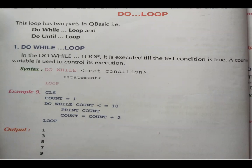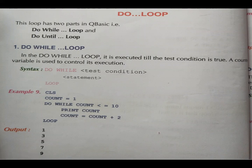That is called the do loop. Do loop means the condition is tested last. It has two parts: do while loop and do until loop. Do while loop executes as long as the condition is true. Do until loop is the opposite — it executes as long as the condition is false, and stops when the condition becomes true.